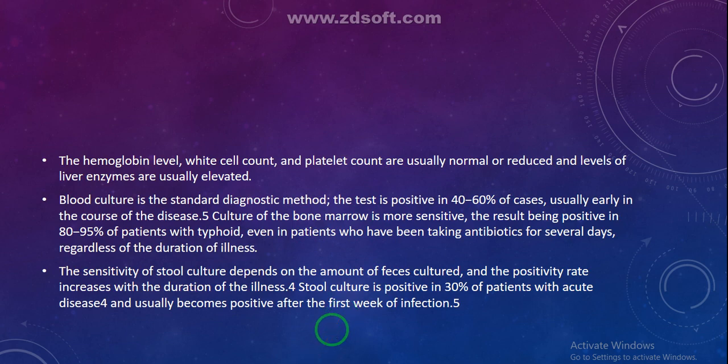Hemoglobin, WBC, and platelet counts are usually normal or reduced, while liver enzyme levels are usually elevated in typhoid. Blood culture is the standard diagnostic method, positive in 40 to 60 percent of cases, usually early in the disease course. Bone marrow culture is more sensitive, positive in 80 to 95 percent of patients, even in those who have been taking antibiotics for several days.